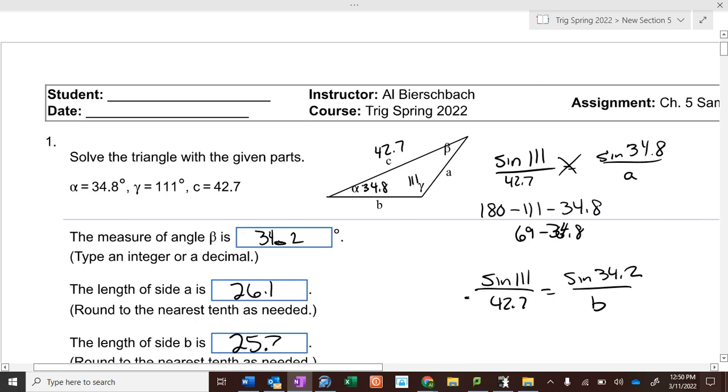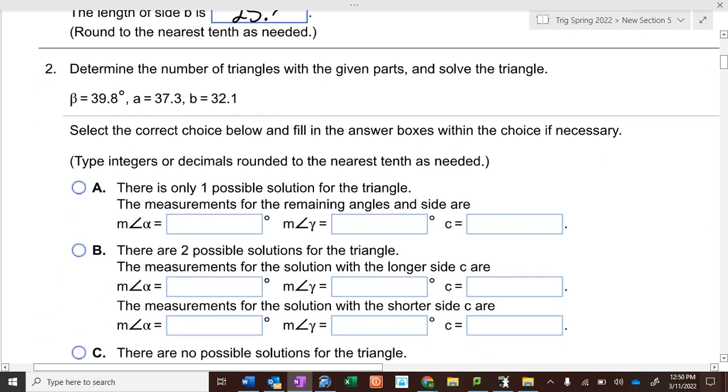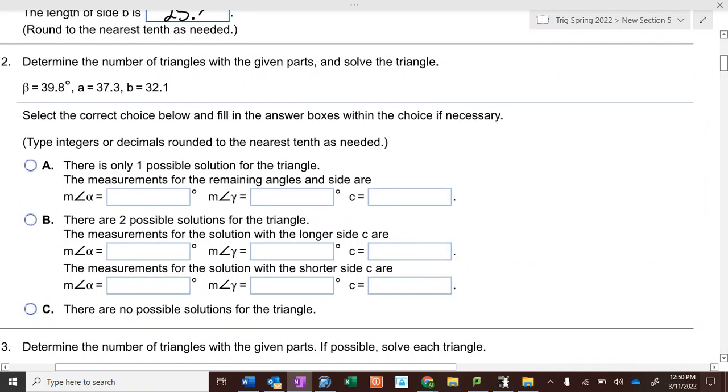Then we get to the side-side-angle. What angle should I put in the lower left? Beta 39.8. What's opposite of that? Beta 32.1. Where should I put the other side? On the left, right here. So that makes this alpha, this gamma, and this c. So if I do the law of sines, sine of 39.8 over 32.1 equals the sine of alpha over 37.3.